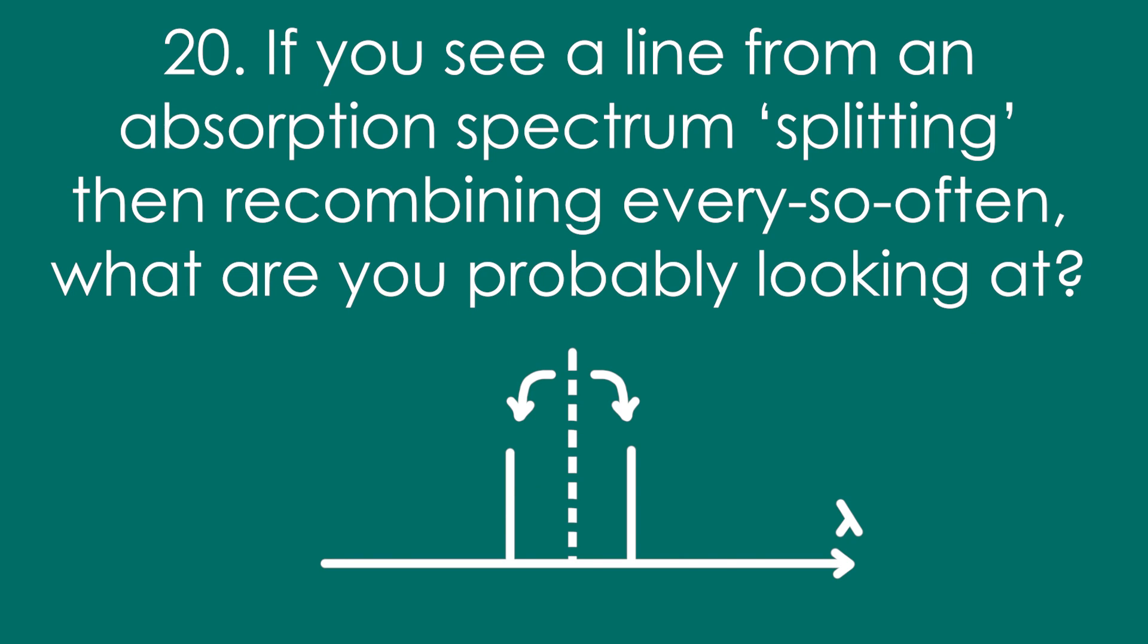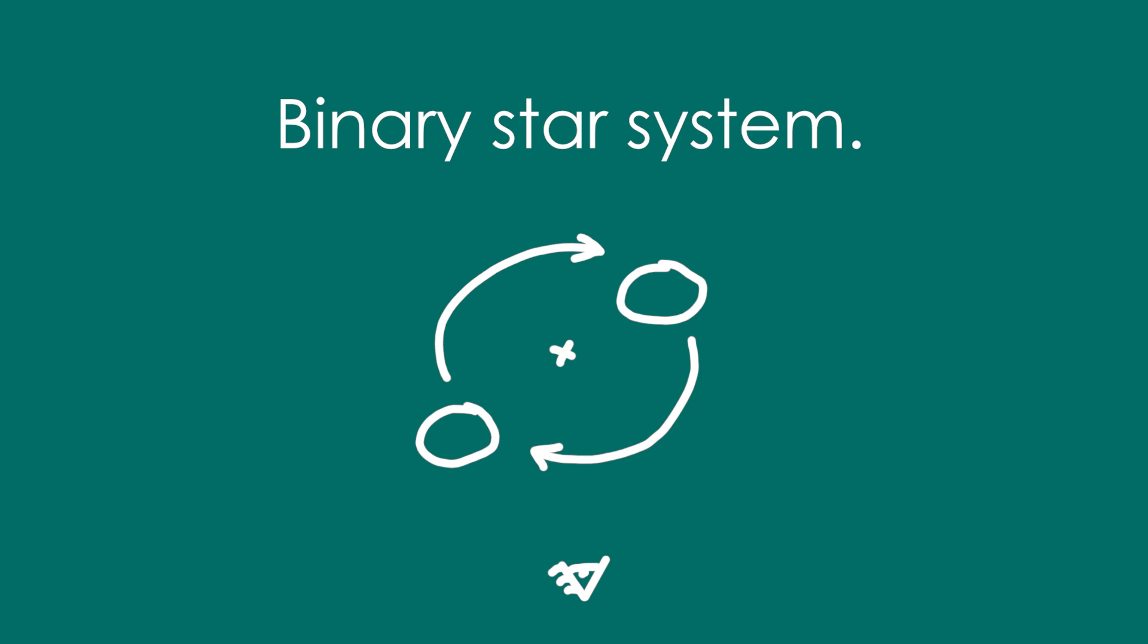Question 20: If you see a line from a spectrum splitting, then recombining every so often, what are you probably looking at? Probably looking at a binary star system. We're looking at it end on, so therefore their velocity relative to us changes as they orbit the common centre of gravity.